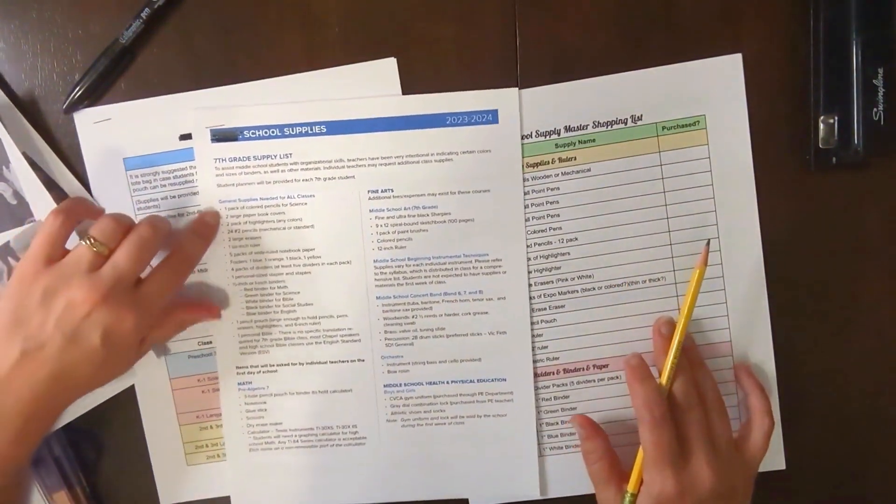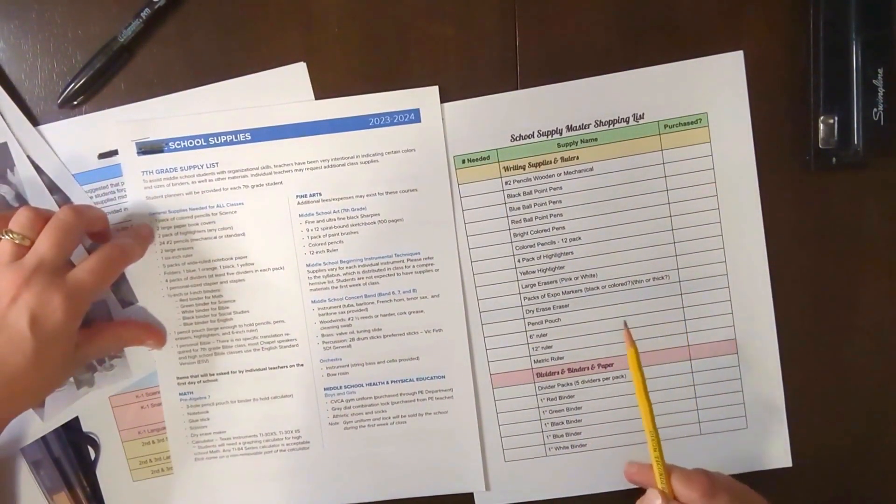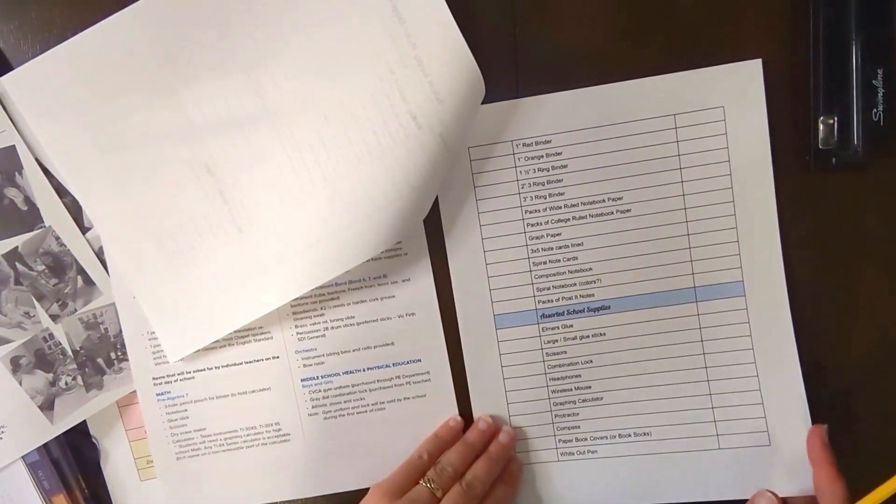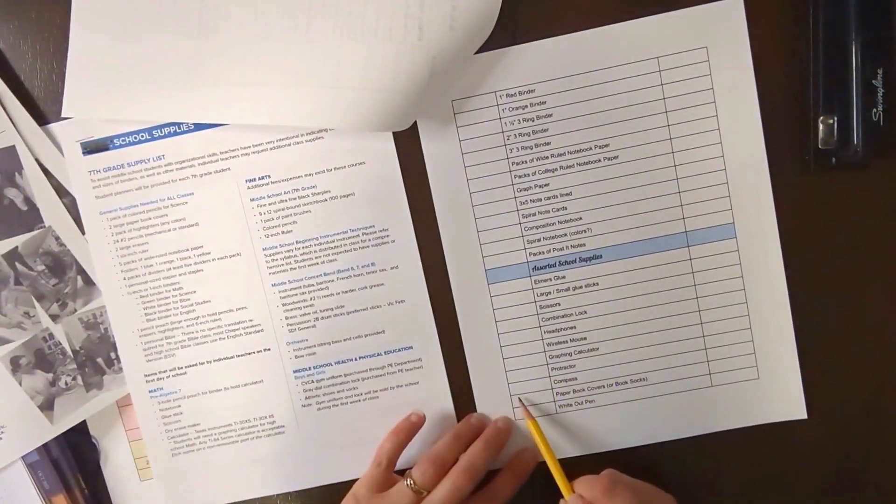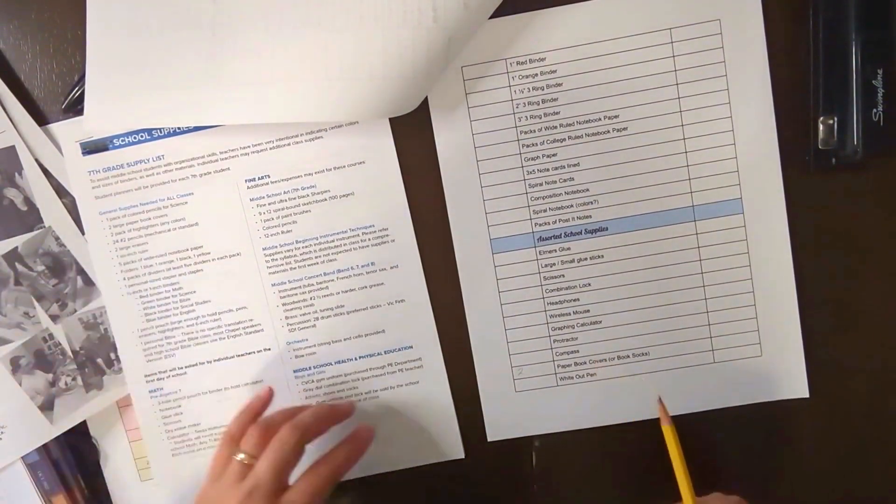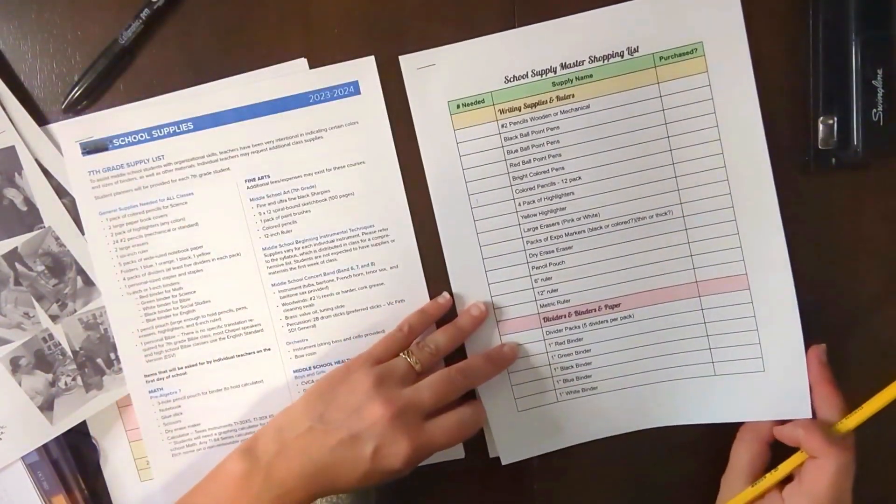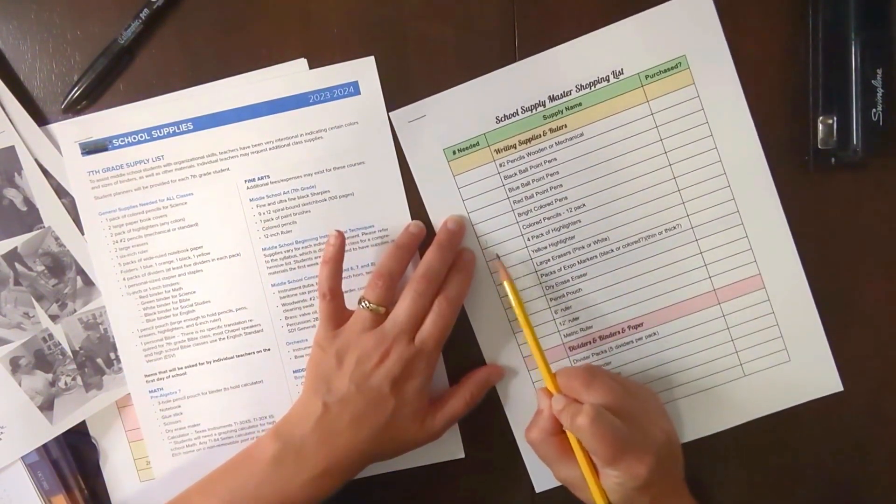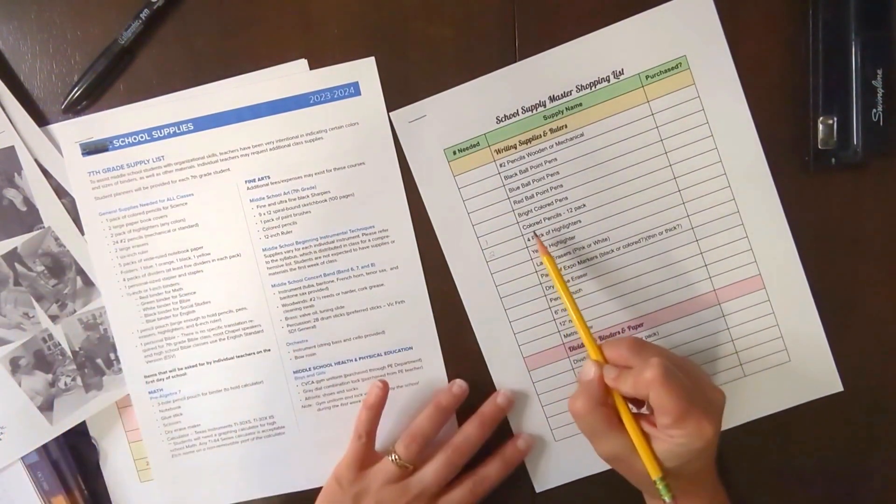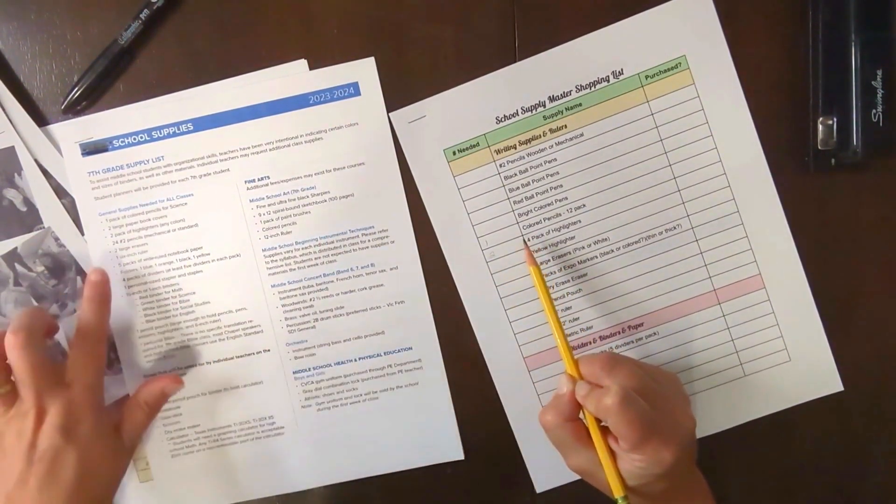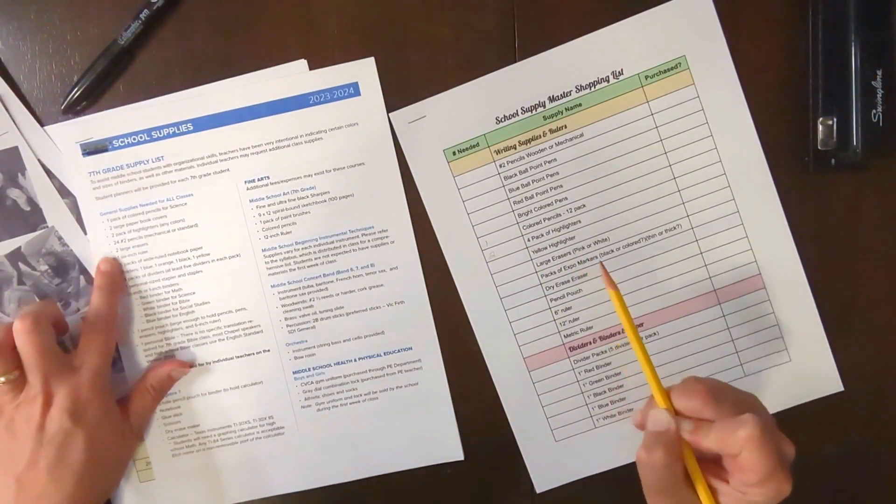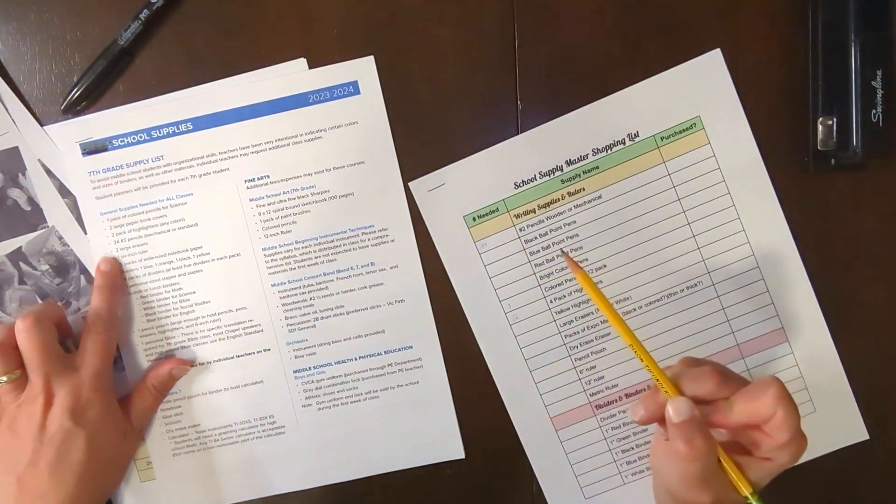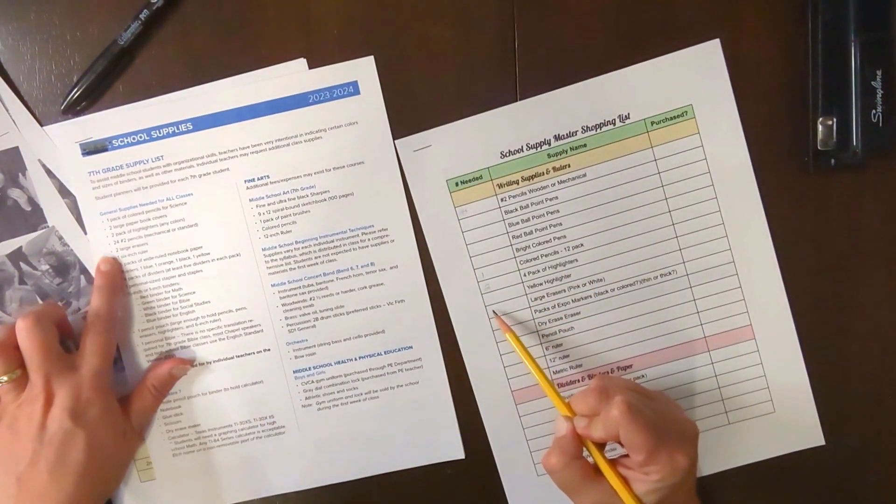So my seventh grader's list, he needs a pack of colored pencils for science. So I'm going to just put one there, two large paper book covers. Now this might not be on my list. Oh yes it is. It's here. So we're going to put two of those here and then he needs two packs of highlighters, any color. So I'm just going to work back and forth here, two packs of highlighters, any color. And pencils, 24 pencils, two large erasers. You can see I'm just working through this list.